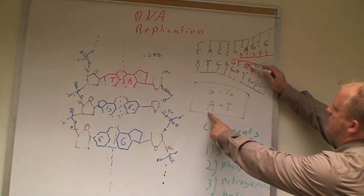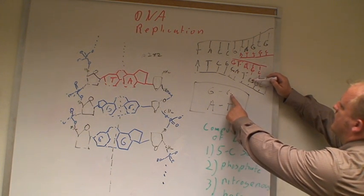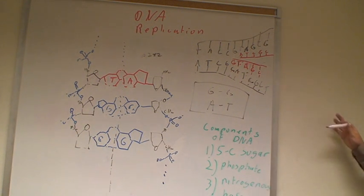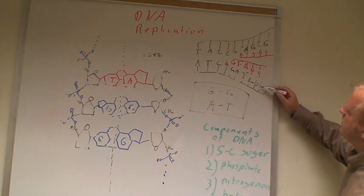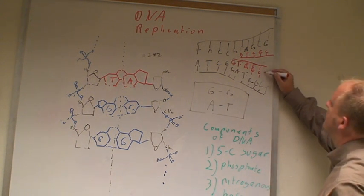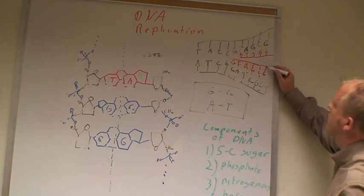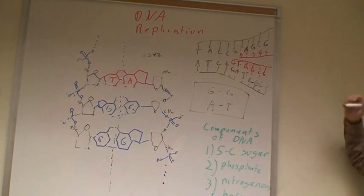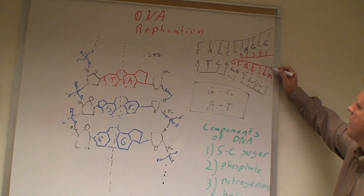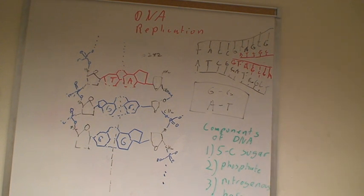It sees the C and puts a G right here, all along down the strand. So when it reads the C, what is it going to put? That's right, it's going to put a G on the corresponding growing strand.